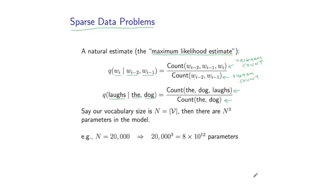Now as I said earlier, in general in these models we are going to have a very large number of parameters. So if our vocabulary size is capital N, then there are roughly N cubed parameters in our model.